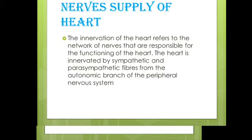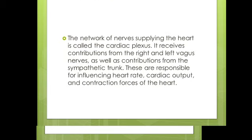The Nerve Supply of the Heart — the Innervation of the Heart refers to the network of nerves responsible for the function of the Heart. The Heart is innervated by Sympathetic and Parasympathetic fibres from the Autonomic Nervous System, or the Autonomic Branch of the Peripheral Nervous System (PNS).